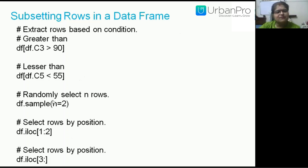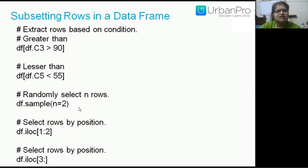Another command is to randomly select n rows. If you have a big dataset and want to randomly select rows, you can use the 'sample' function available in Pandas. For example, df.sample(n=2) will randomly select two rows from a five-row dataset — that is random sampling.